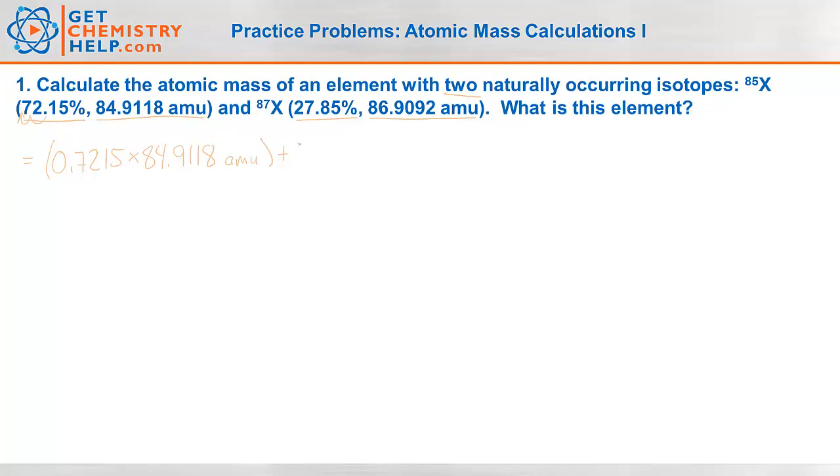So that would be 0.7215 times the abundance of that isotope is 84.9118 amu. And then we do it again for the second isotope. So 27.85% will become 0.2785 times the abundance, 86.9092 atomic mass units. So we're going to be doing a couple of different operations. First we're going to multiply these two numbers. Then we'll multiply these two numbers. And then we'll add them together.